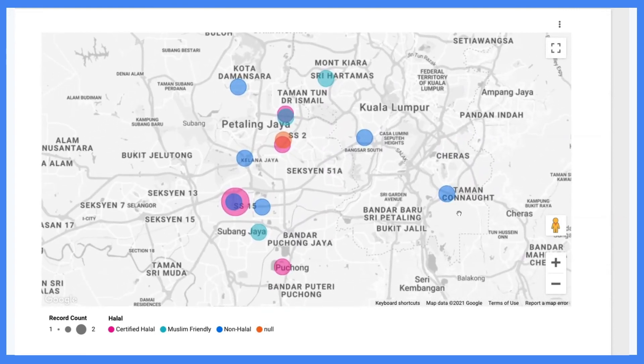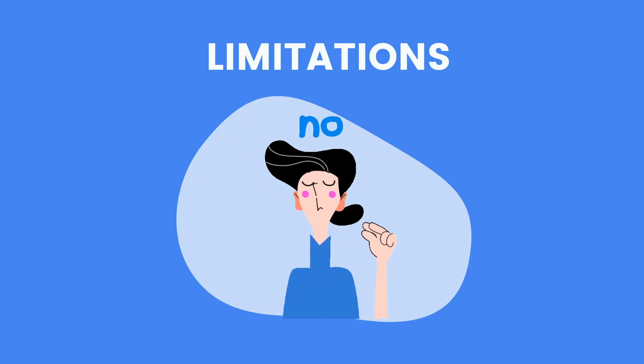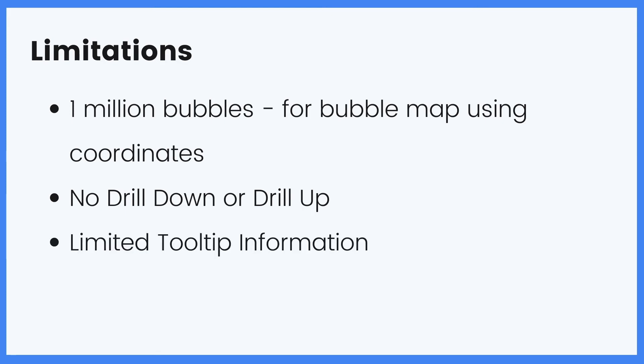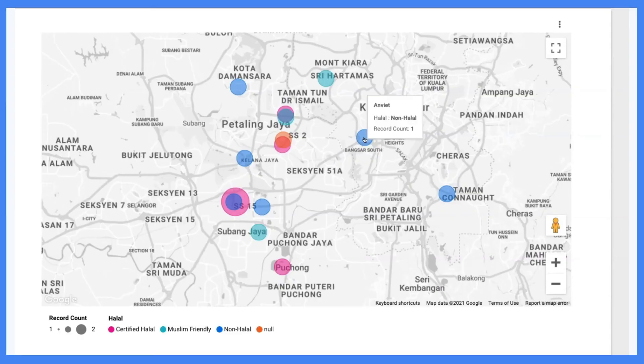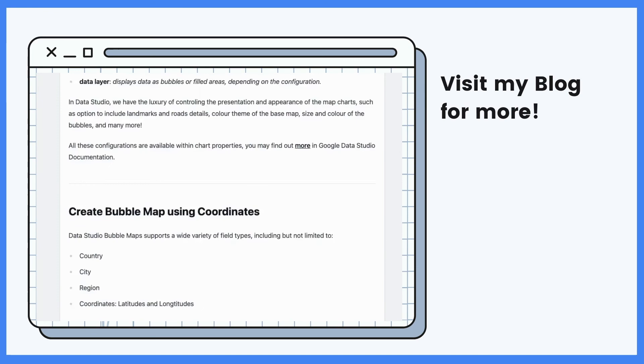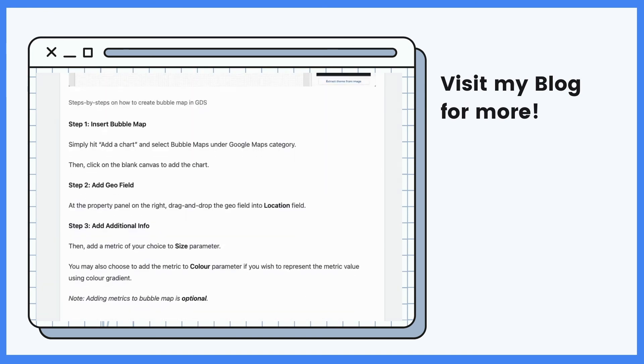Given the convenience and ease of building a bubble map in Data Studio, we can offer a Google Maps-like experience in the reports. However, it does come with some limitations. First, you can only include up to one million bubbles. Second, we are not allowed to drill up or drill down — for example, allowing users to look at a city view and drill up to country view is not available in bubble map. If you want to do that, check out draw charts in Data Studio. Lastly, the information you can display in a tooltip is very limited.